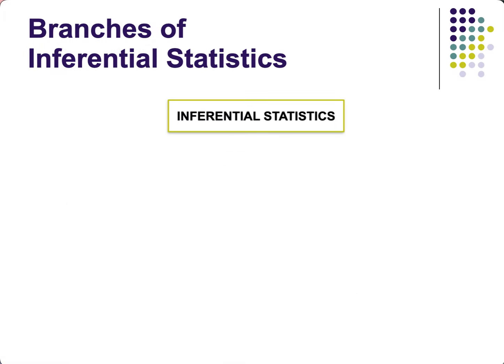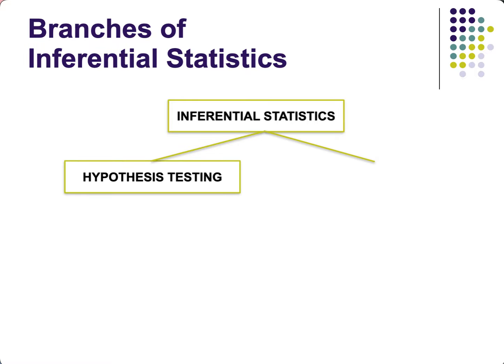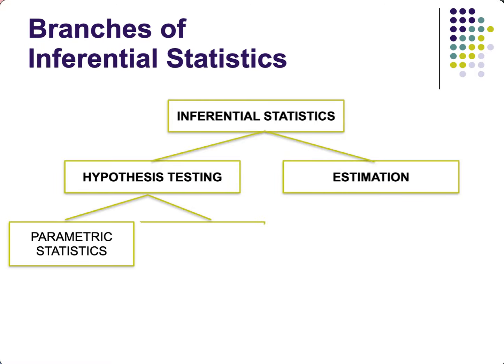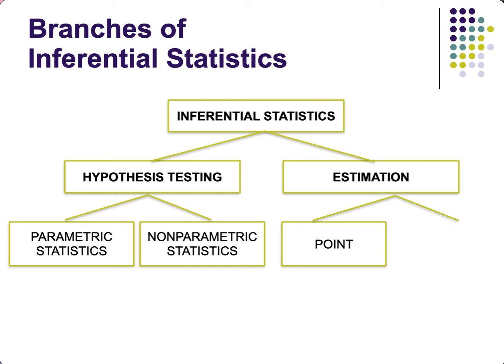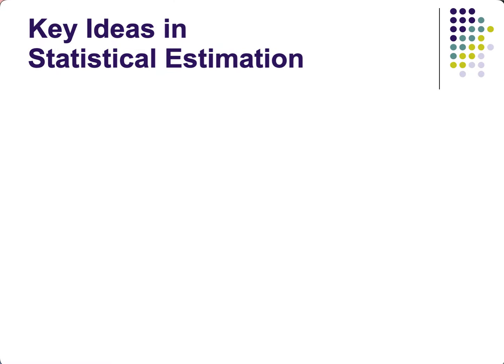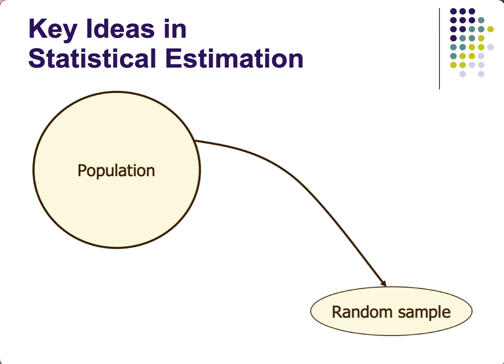The two branches of inferential statistics we will highlight are hypothesis testing and estimation. In the remaining videos, we have focused more on hypothesis testing. For estimation, we have two types: point estimate and interval estimate. Estimation deserves its own chapter and set of videos, but for now we will focus on hypothesis testing.